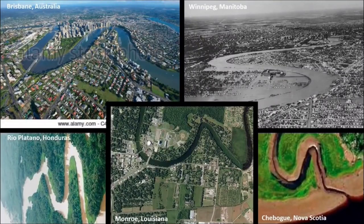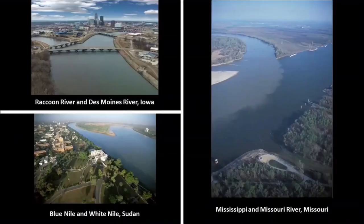Are rivers actually natural? I think they are man-made, considering that I consistently find the exact same snaky S-shaped rivers all over the world, including but not limited to rivers in Australia, Manitoba, Honduras, Louisiana, and Nova Scotia. And I find the same similarity in appearance with river confluences, like shown in the states of Iowa, Missouri, and Sudan in Africa.